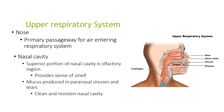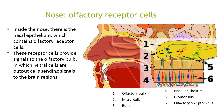Looking at the upper respiratory system, you have the nose, which is the primary passageway for air entering the respiratory system. The nasal cavity's superior portion is the olfactory region, which provides a sense of smell. Mucus drains from the paranasal sinuses, and tears help clean and moisten the nasal cavities. Within the nose, there is the nasal epithelium, which contains olfactory receptor cells. These receptor cells send signals to the olfactory bulb, where mitral cells — the output cells — send signals to brain regions.